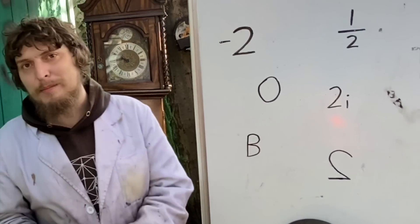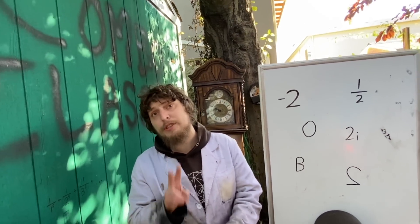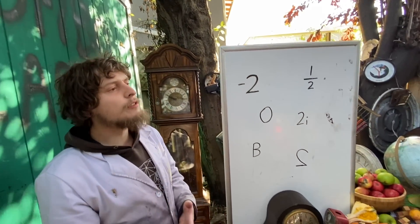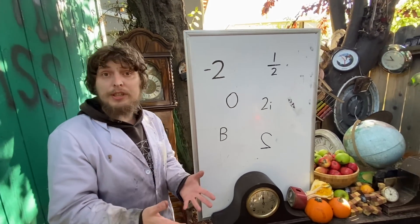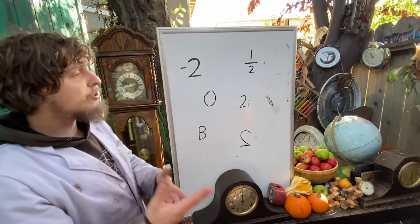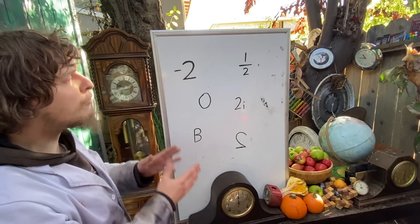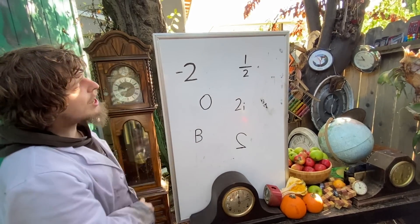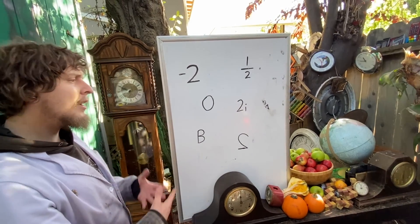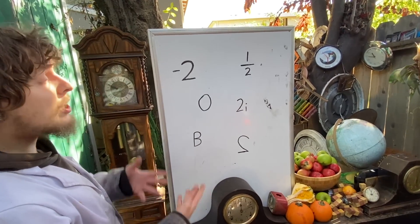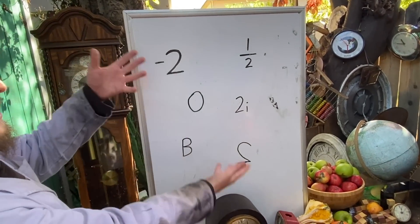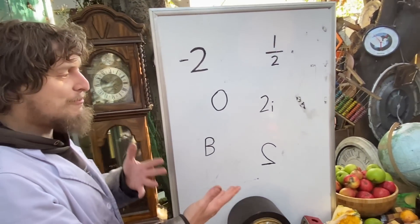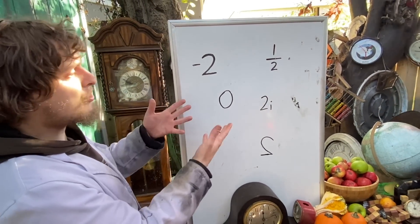What's the antonym of the number two? An antonym is sort of like the opposite or inverse or reverse of a word. Do numbers have those? And if so, could we call any of these the antonym of the number two?